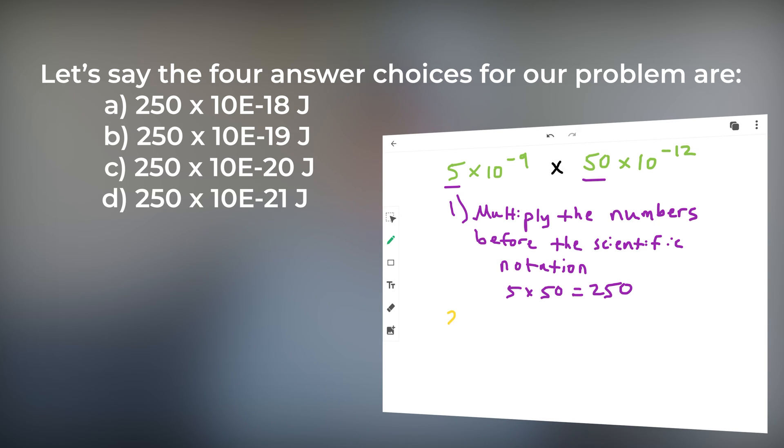Second, add the exponent values, which are negative 9 and negative 12 in this case. There's no need to fear this math equation either. If we add two negative numbers together, we get an even bigger negative number. Negative 9 plus negative 12 is the same thing as negative 9 minus 12 or minus 21.